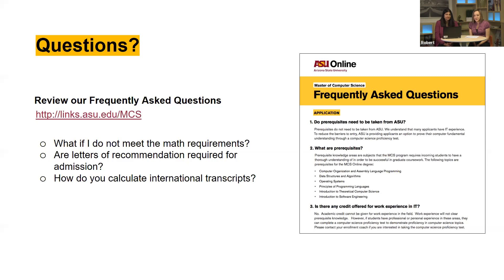We have abundant information to evaluate international transcripts. For international transcripts, we focus on the math and prerequisite coursework — is it there, and how did you do? The 3.25 GPA threshold varies by country: in the U.S. it's a B-plus average, and in India it's commonly the first-class designation. Now let's get to some of the questions coming in online.